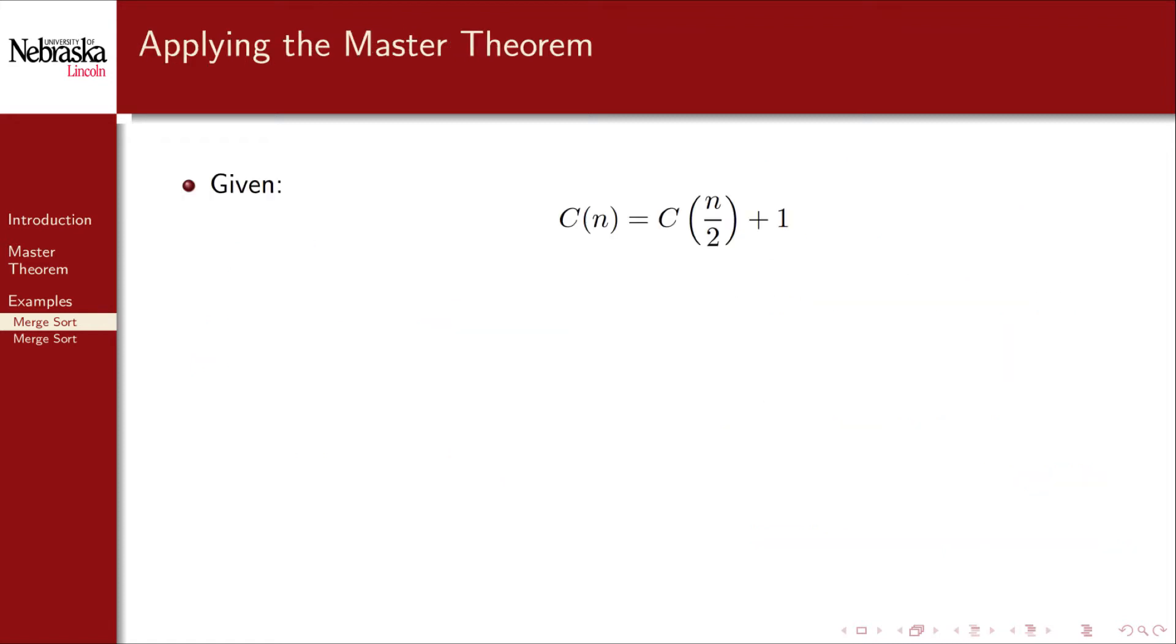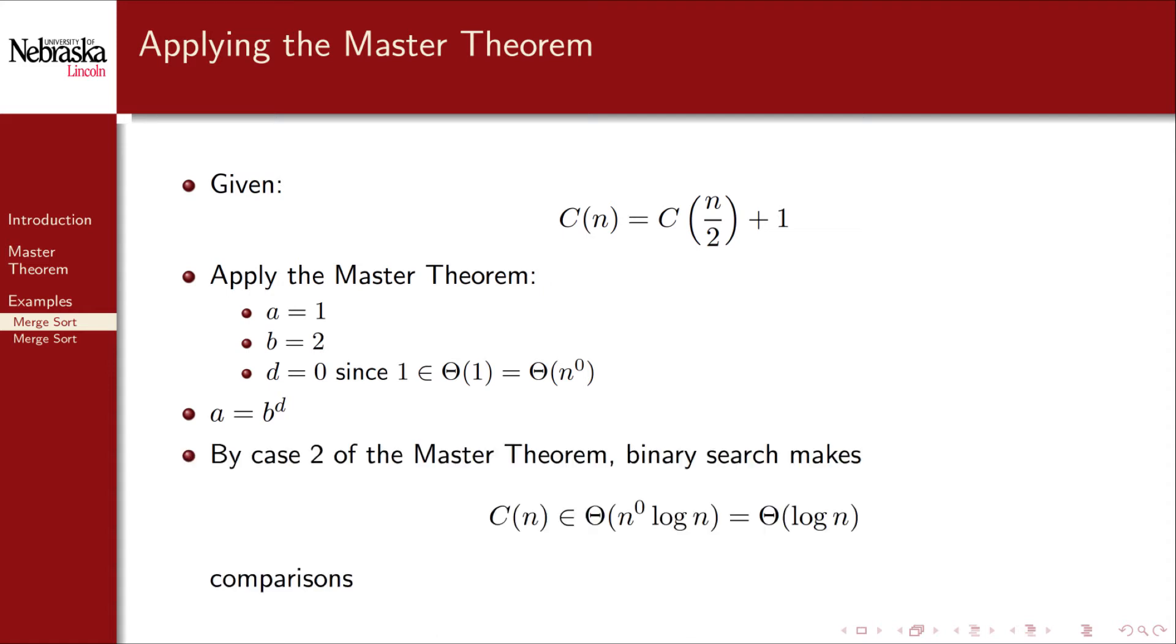Rearranging the terms gives us a recurrence relation that characterizes the number of comparisons made by binary search. This particular recurrence relation is in the required form and we can apply the master theorem. a, the number of recursive calls, is 1. b is 2 since we cut the array in half each time. And d is 0 because a constant function is bounded by a polynomial of degree 0. The relation is that a is equal to b to the d. So by case 2 of the master theorem, binary search makes a logarithmic number of comparisons.